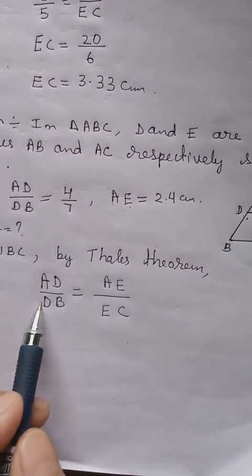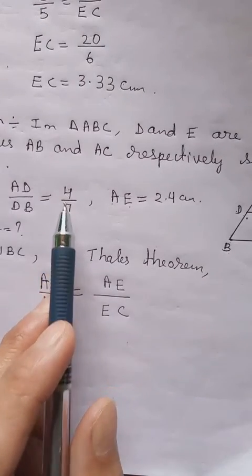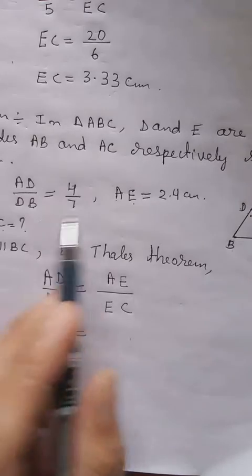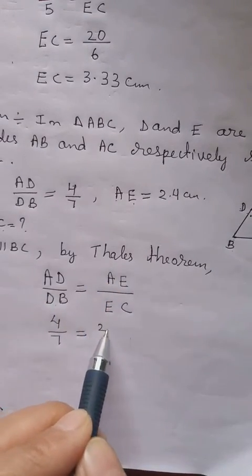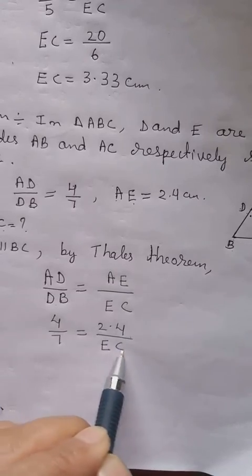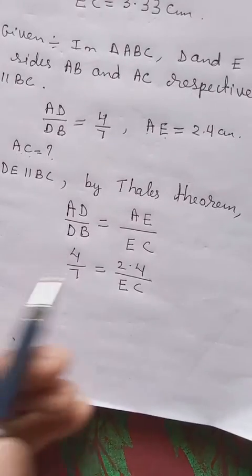AD by DB already given to be 4 by 7. We can replace that. AE already given to be 2.4. EC we still don't know. Let it be there. Now we will find EC.